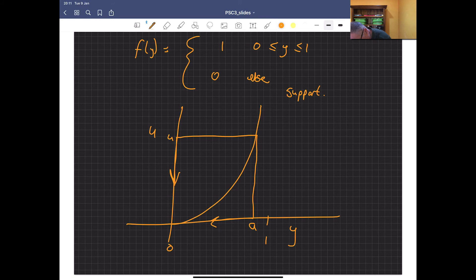So we know that Y lies between 0 and 1, so Y squared is between 0 and 1. And so U is between 0 and 1. So where this is 1, this is also 1.